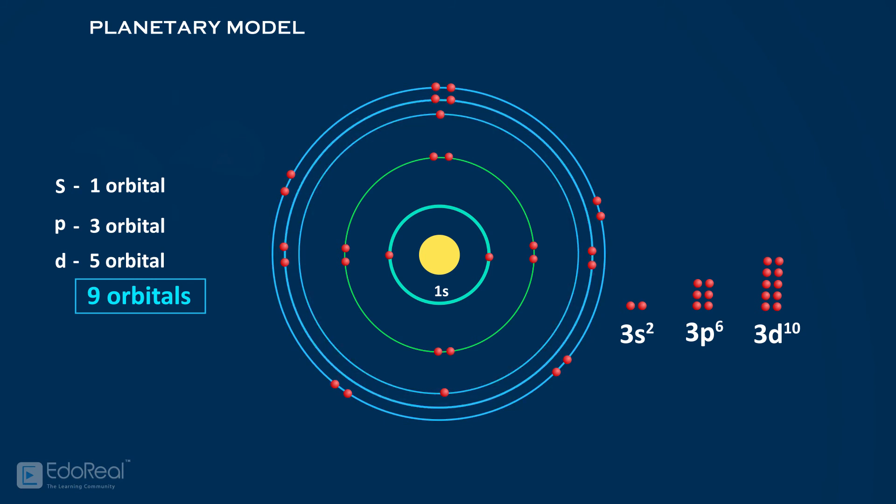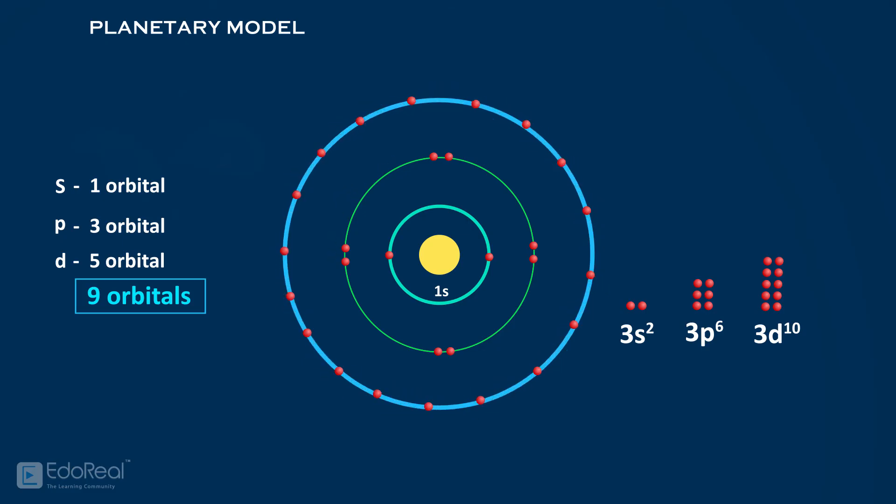So collectively, the 9 orbitals are represented with a single concentric circle in the planetary model. This circle is represented with letter M and number 3, where 3 represents third energy level or orbit.